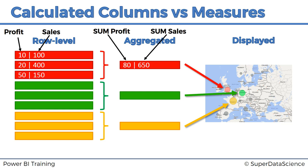Now let's say we want to create a calculated column — something we've talked about before. Basically, we calculate a column based on our existing columns and add it to our data. Here a calculated column represents profit divided by sales for each individual row, which equates to the profit margin. So for the first item the profit margin is 10% or 0.1, for the second it's 0.05, for the third it's 0.33. It's a straightforward procedure — divide one column by the other and add this synthetic column to the data set.